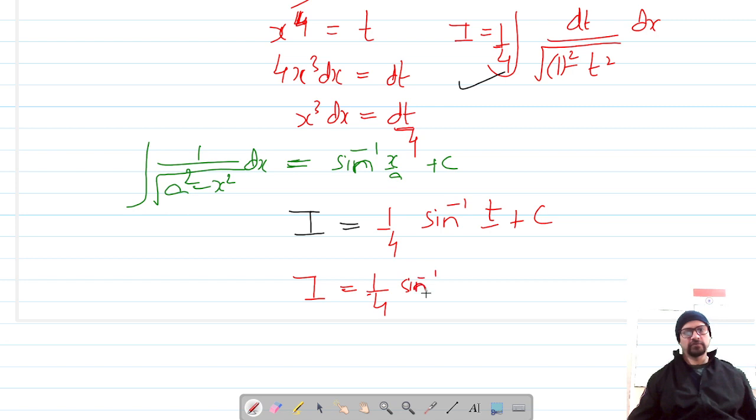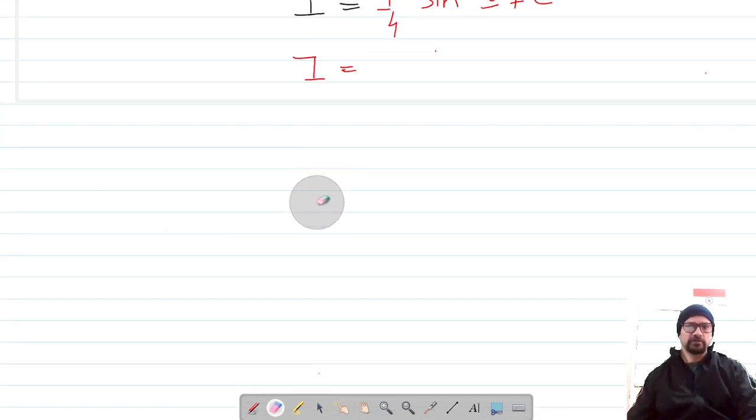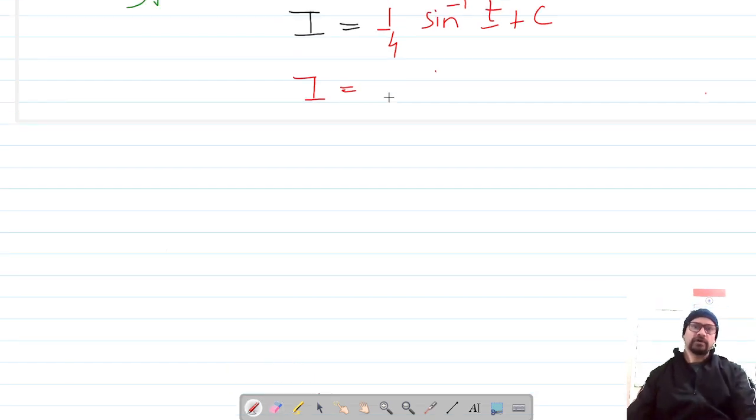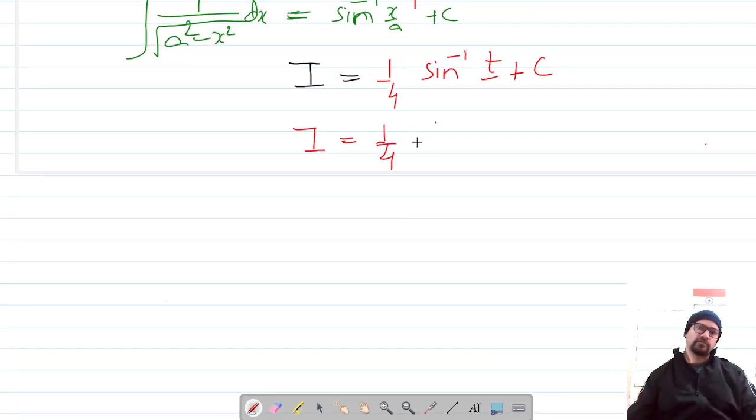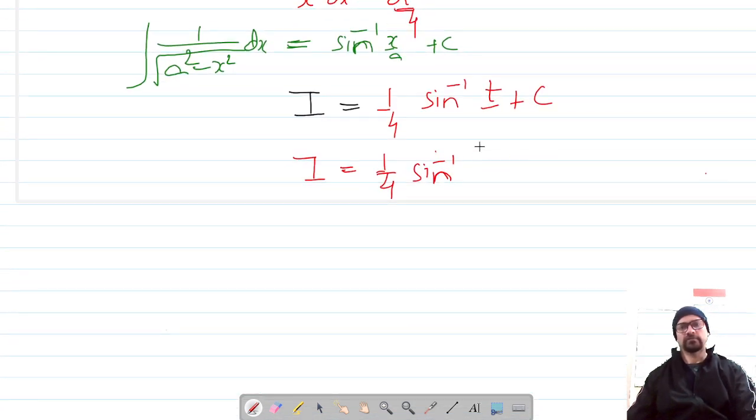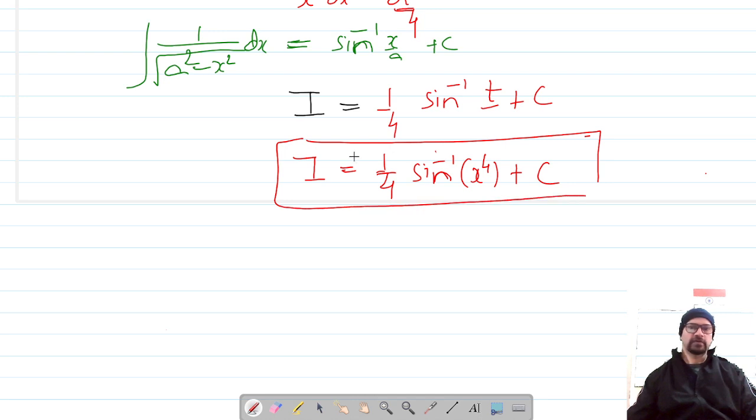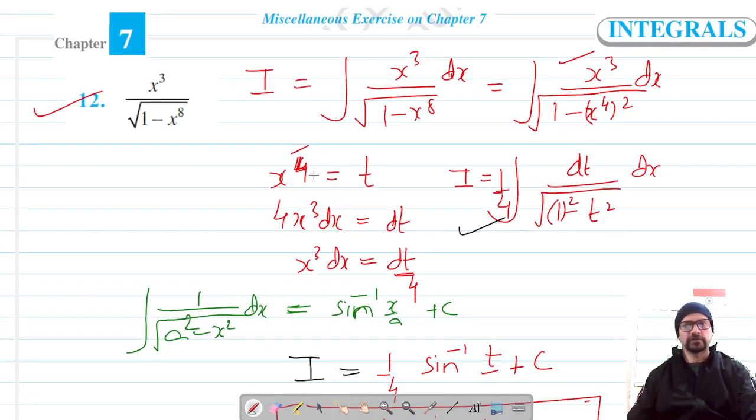This is 1 by 4 sine inverse and t was x raised power 4, so sine inverse of x raised power 4 plus C and this is our answer for question number 12. Do like, share, and subscribe. Thank you for watching.